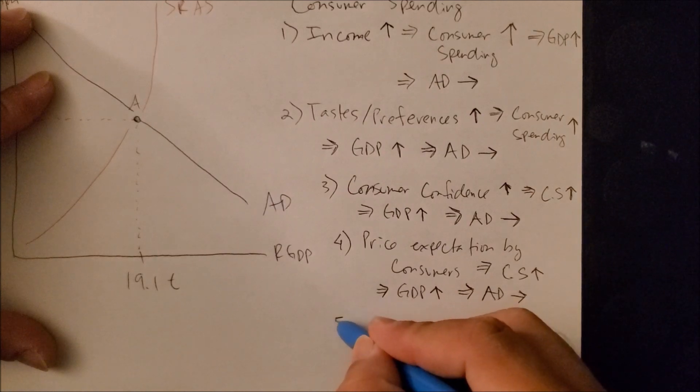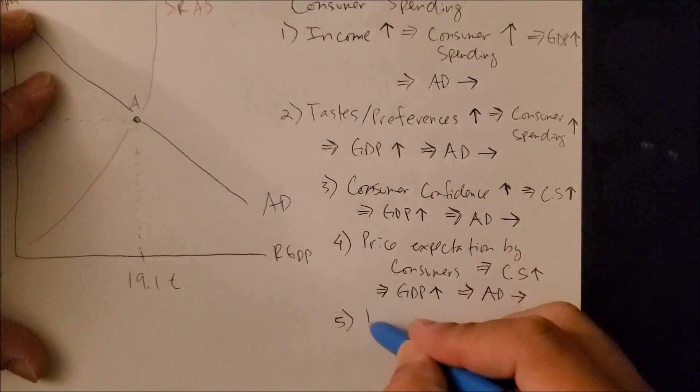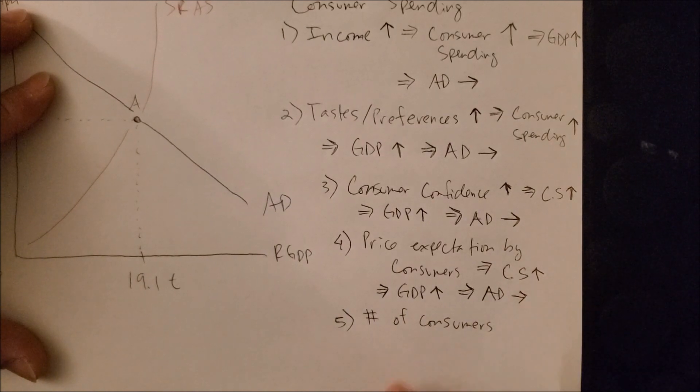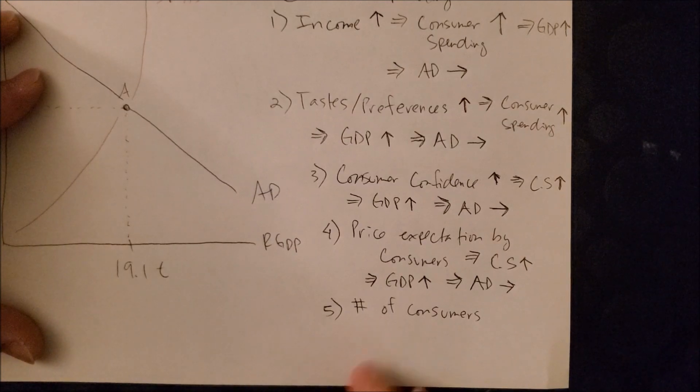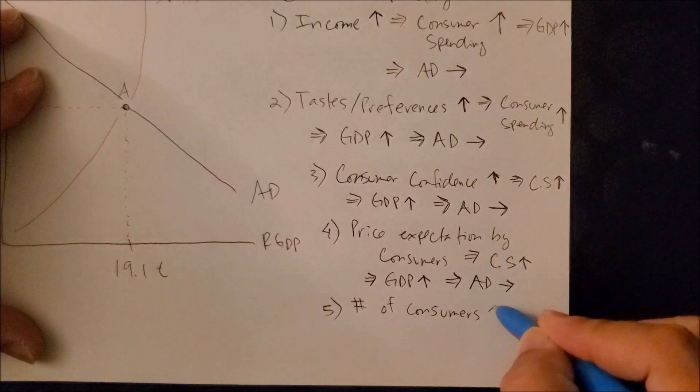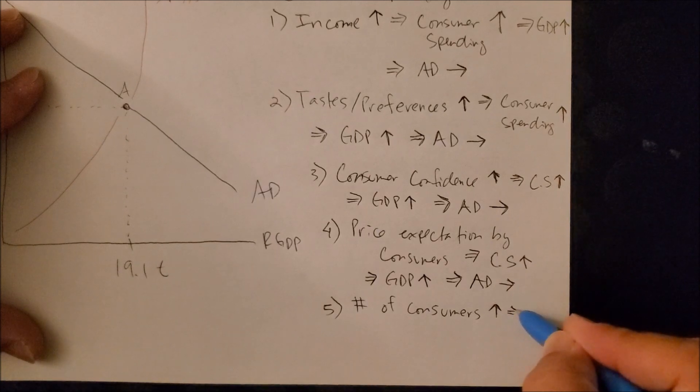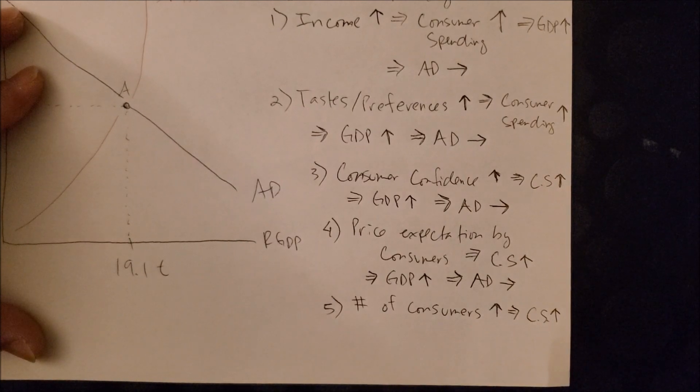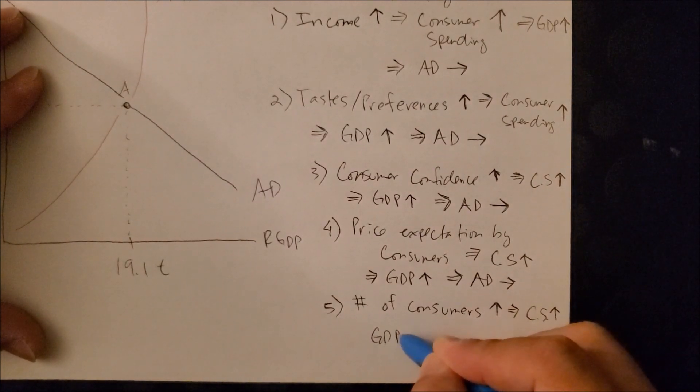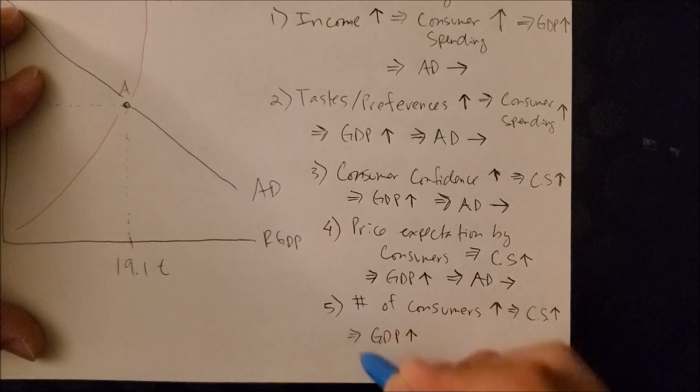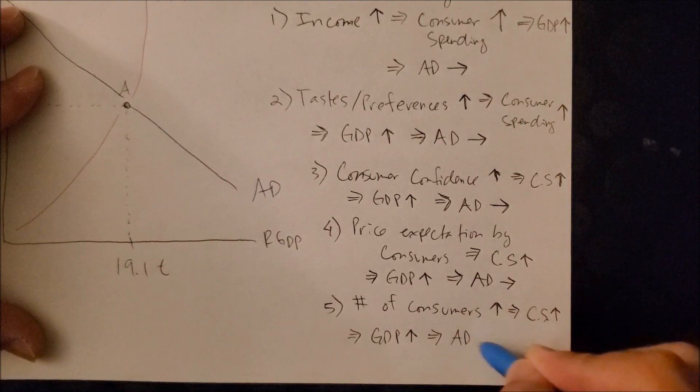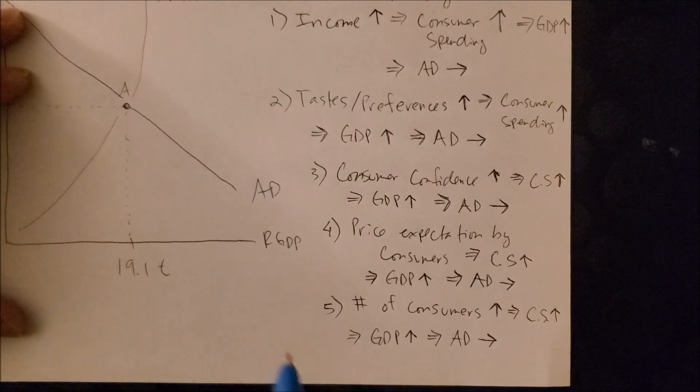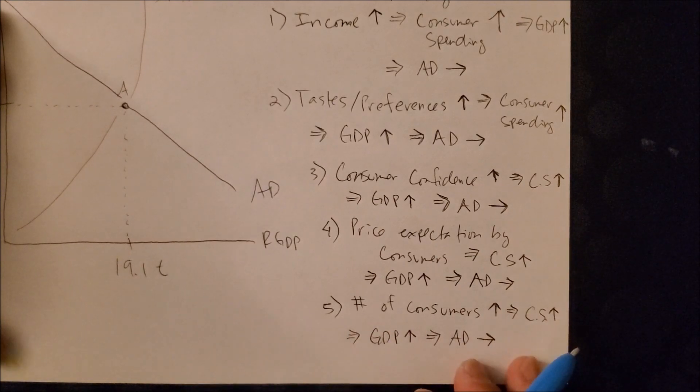And the last factor that affects AD is the sheer number of consumers that are entering the market. So as more and more consumers enter a market, there's a higher likelihood that they will consume more goods. And as consumer spending increases, GDP is bound to increase. And AD will shift one more time to the right. The five factors that shift AD to the right.